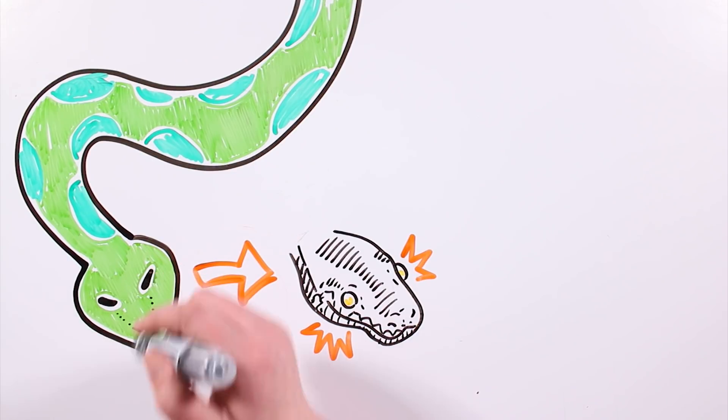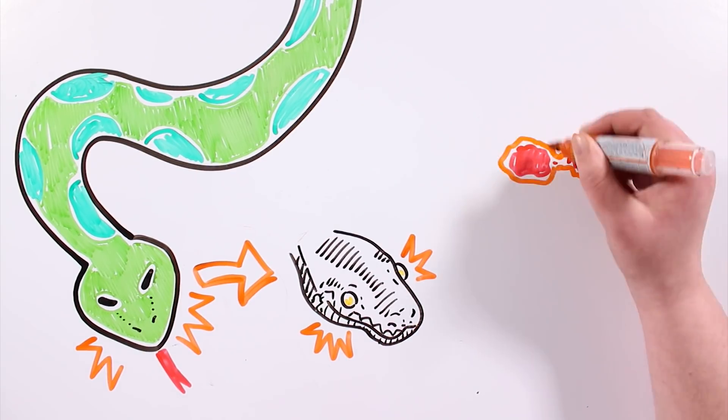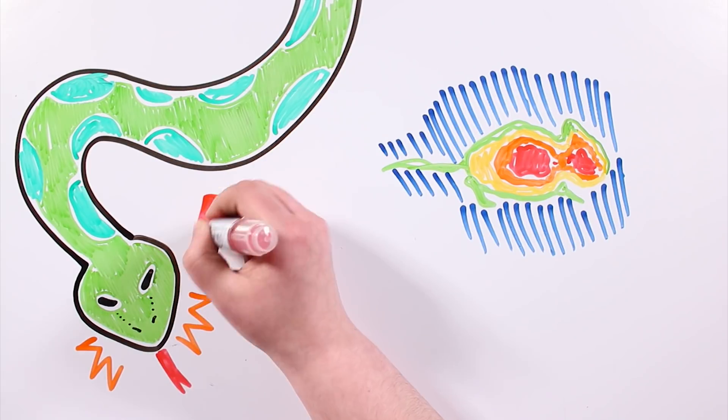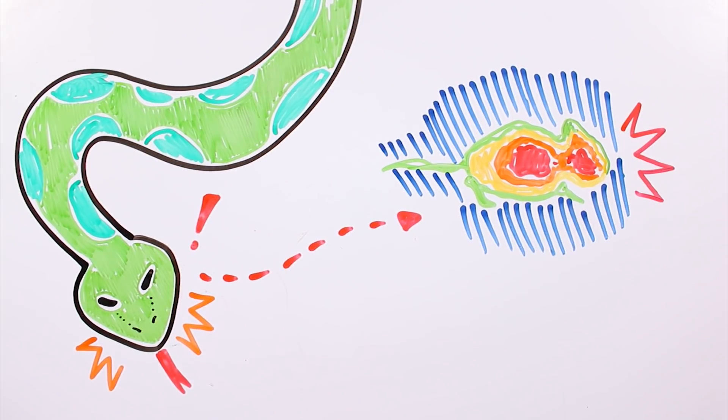Some snakes have infrared receptors in pits between their nostrils and their eye, and with them, they can see the heat given off by other animals. With their thermal vision, there is no prey that goes unseen.